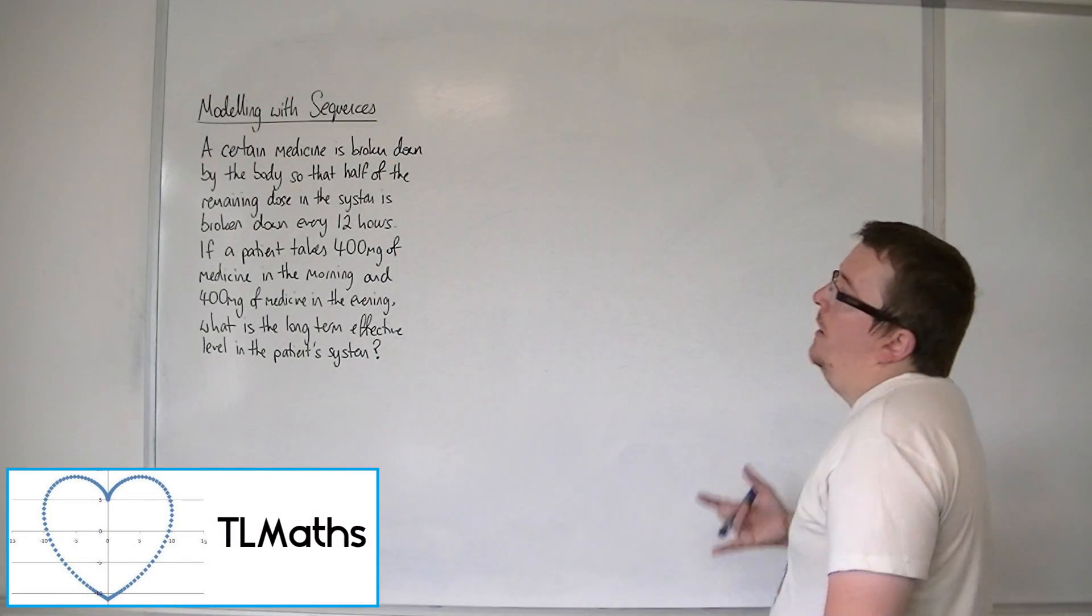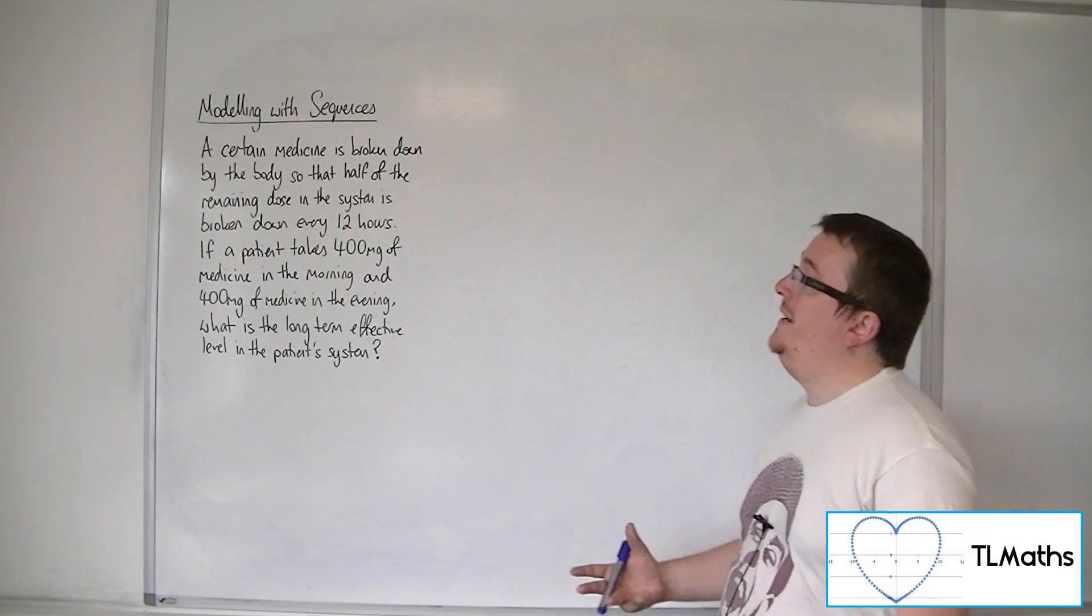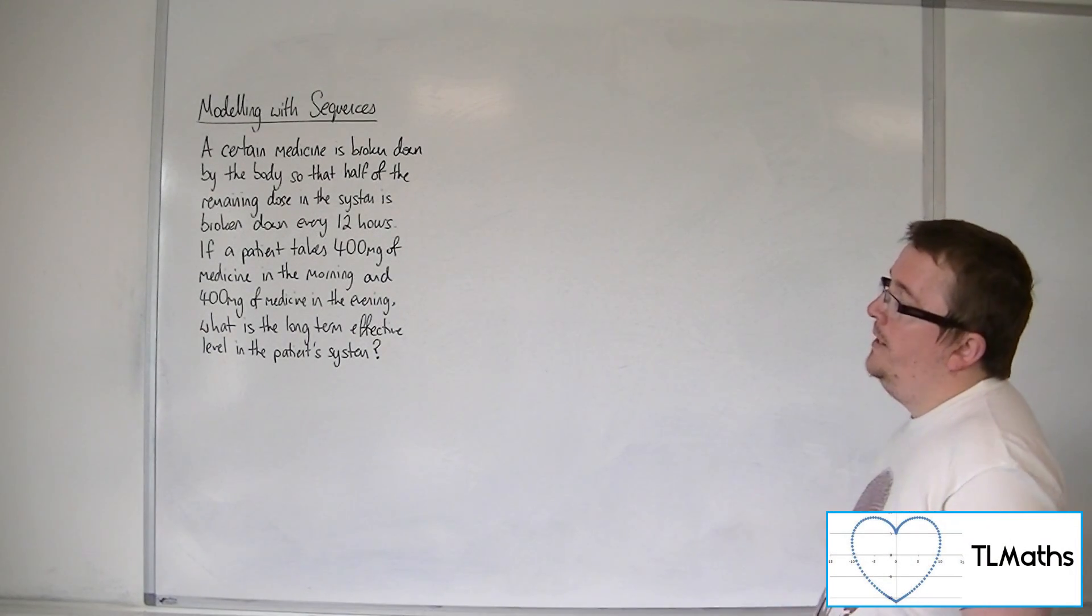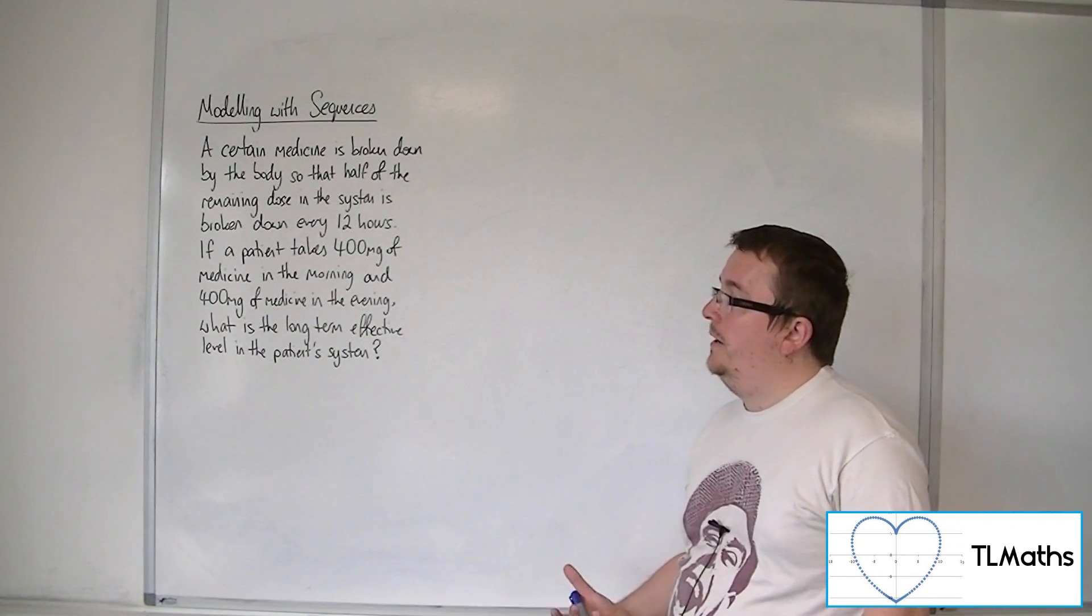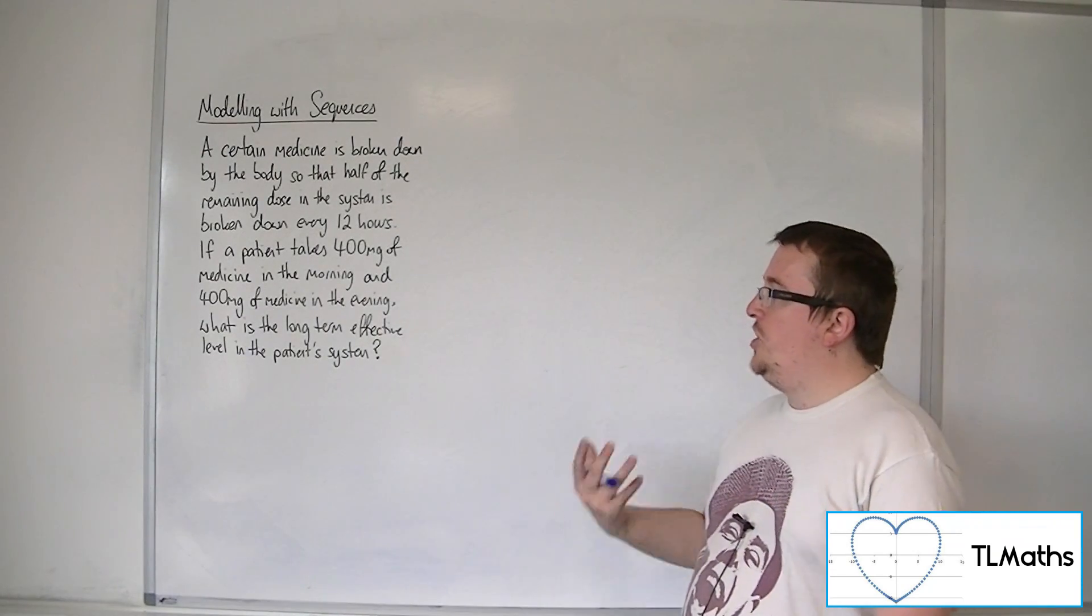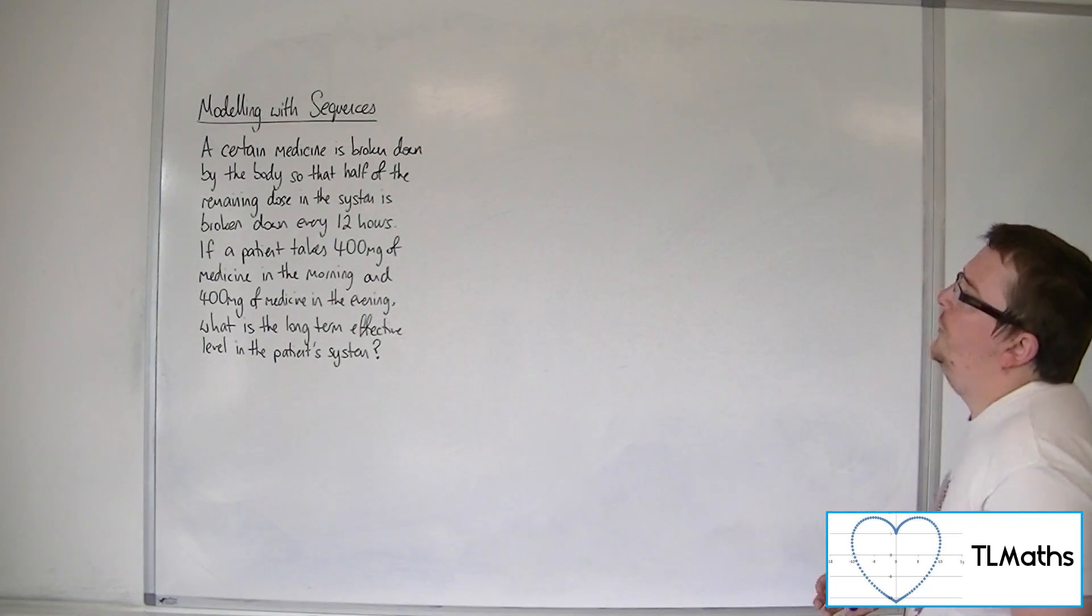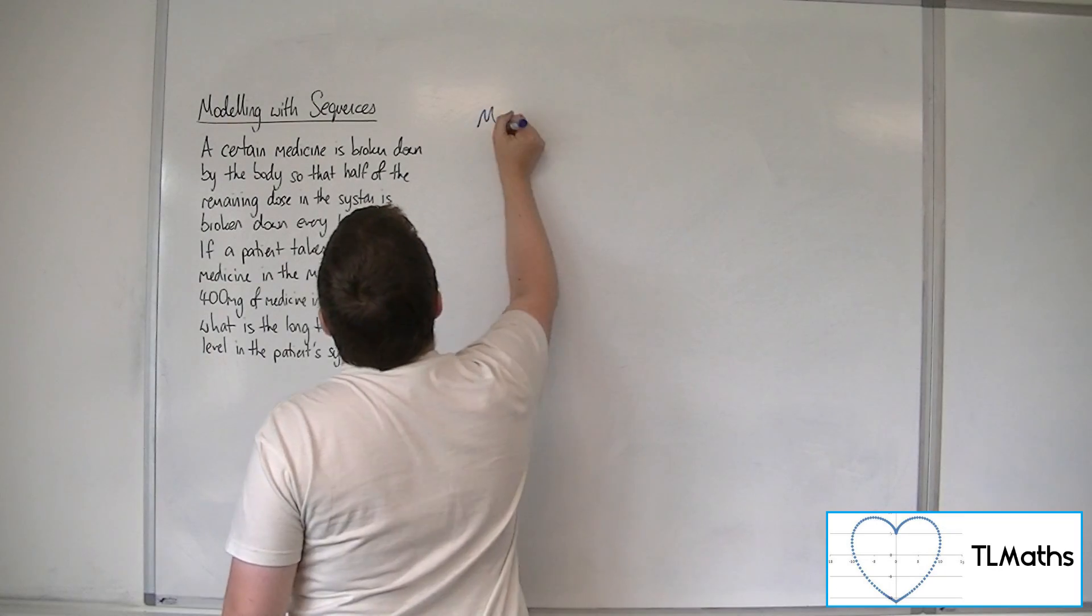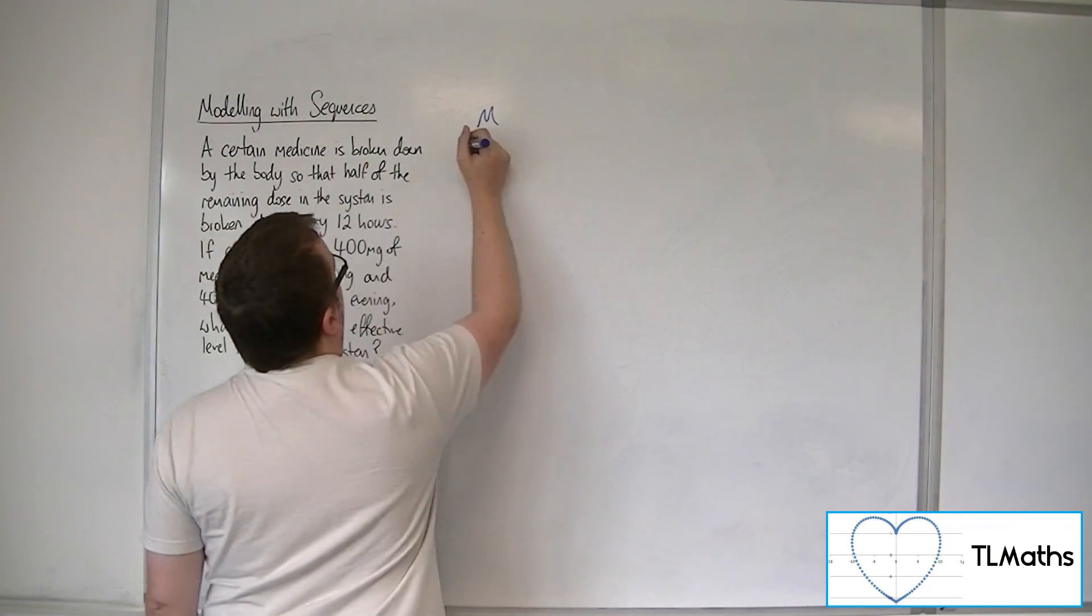Okay, so in this problem, a certain medicine is broken down by the body so that half of the remaining dose in the system is broken down every 12 hours. If a patient takes 400mg of medicine in the morning or 400mg of medicine in the evening, what is the long-term effective level in the patient's system? So, what we're saying here is that in the morning, the patient takes 400mg.